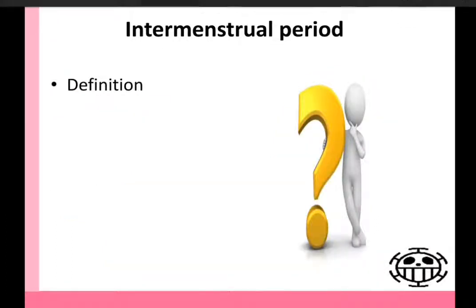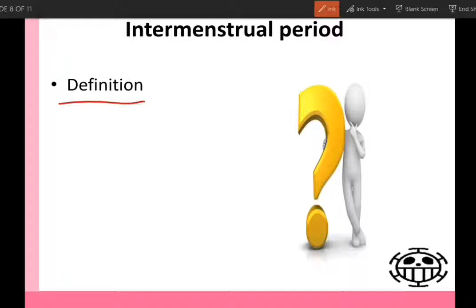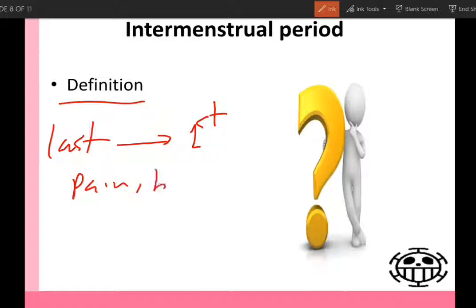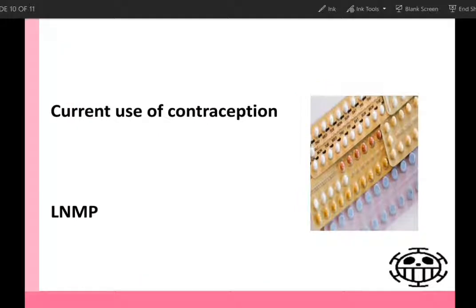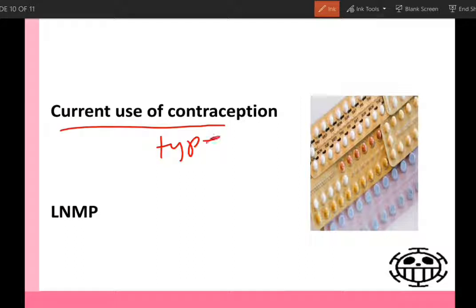Intermenstrual period. The definition of intermenstrual period is the period from the last day of flow to the first day of the next flow. We should ask about pain, bleeding, or discharge during this period. Current use of contraception — current means within six months. So we should ask about whether there is use of contraception, the type of contraception, and the duration of use.